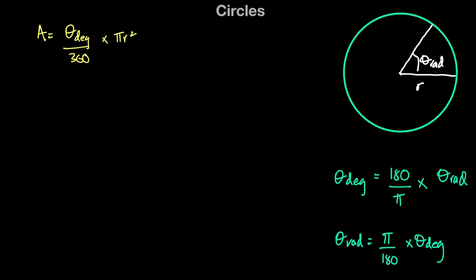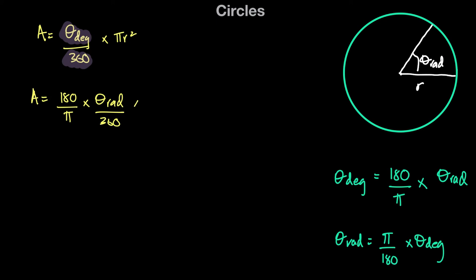So we want to find the area of the sector, which is A, in terms of the angle in radians. We have an expression for the angle in degrees in terms of the angle in radians, so we can simply substitute. We can say that the area of the sector A is equal to the angle in degrees rewritten as 180 over pi times the angle in radians, divided by 360, multiplied by pi r squared.